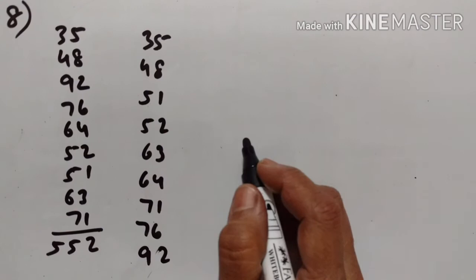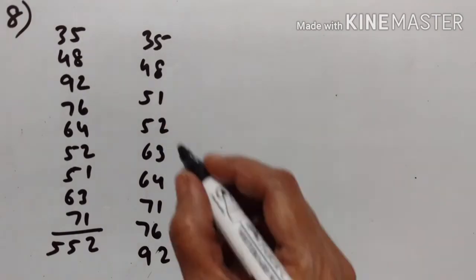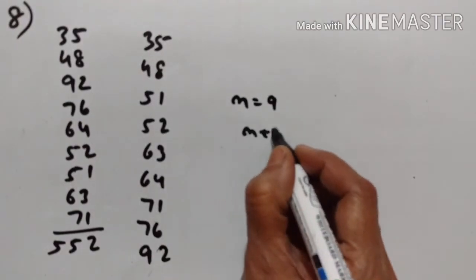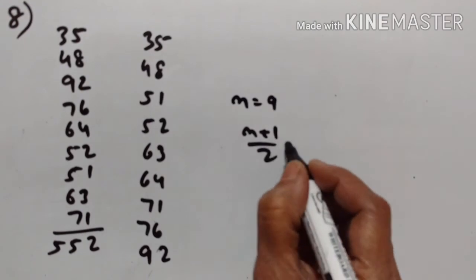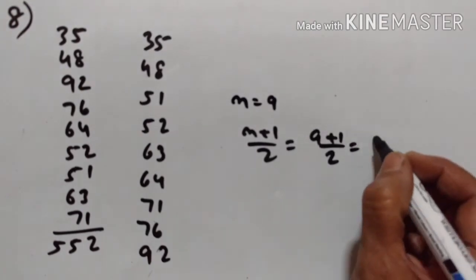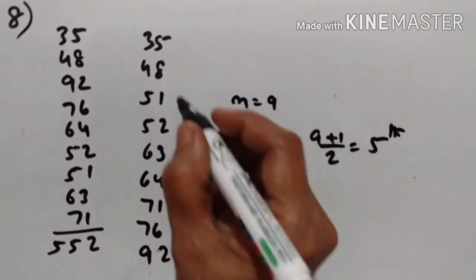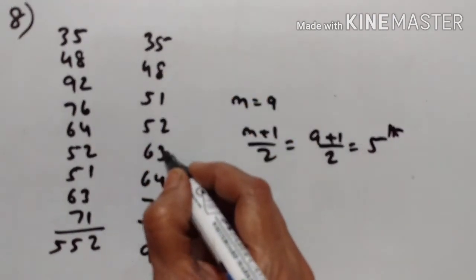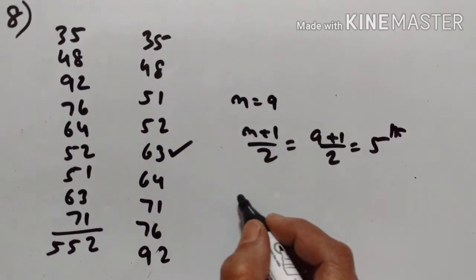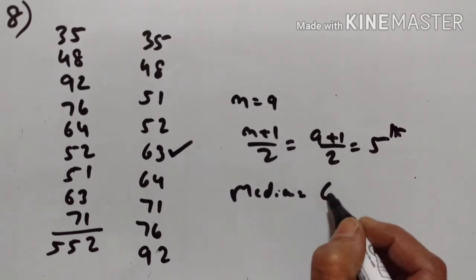Let us find the median now. n is equal to 9, so n plus 1 upon 2 equals 9 plus 1 upon 2, that is 5. So we need the 5th term: 1, 2, 3, 4, 5. This is the 5th term. Median is equal to 63.